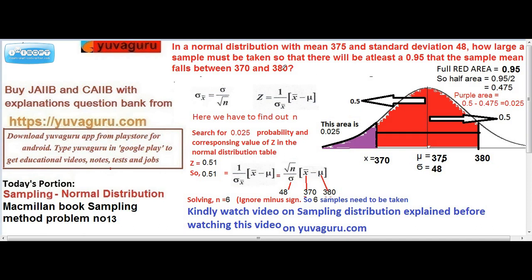So here we have two values of x bar or mu x bar. Our mu, the population mean, is 375. Our sigma standard deviation is 48. One value is 370 of mu x or x bar, the other value of x bar is 380. Now we have to find out the number of samples.